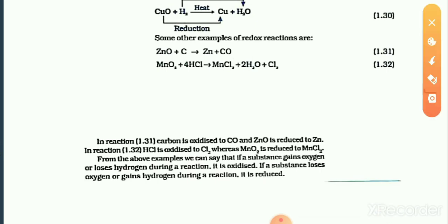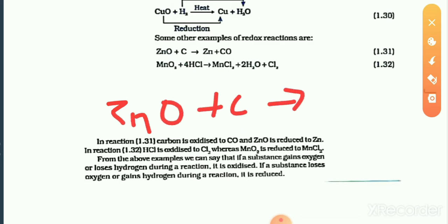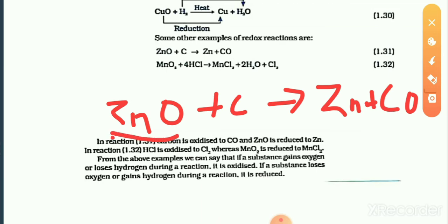All right. Look here: zinc oxide plus carbon gives zinc plus carbon monoxide. In the reactant side, zinc oxide is there. When it comes to the product, zinc loses its oxygen atom.